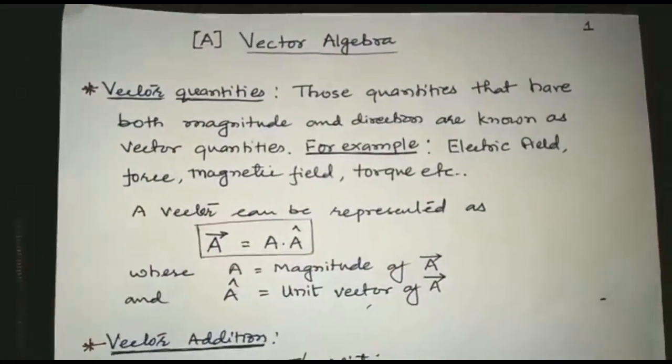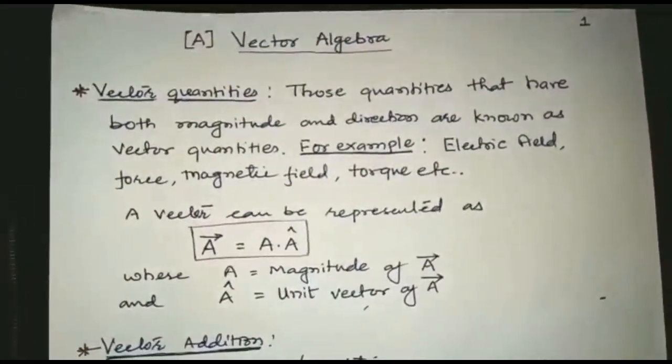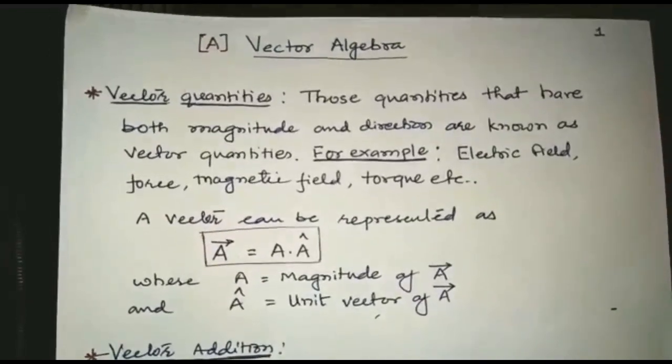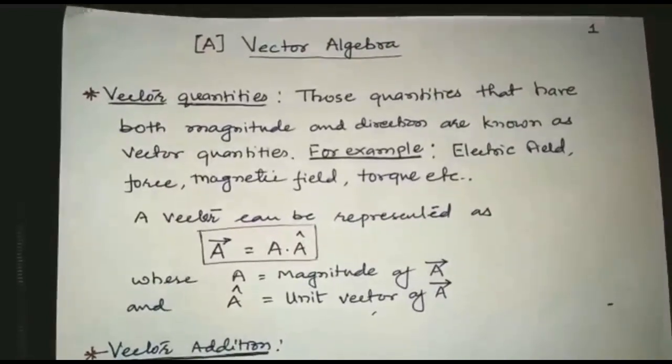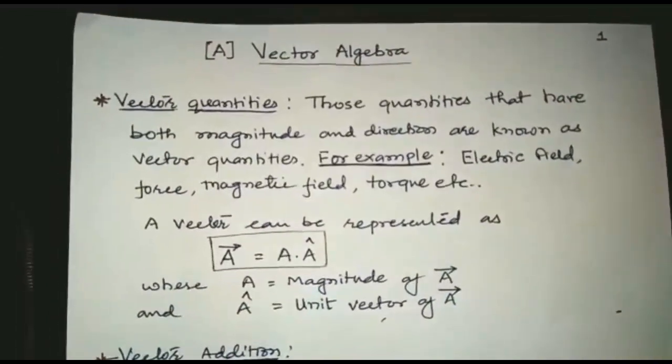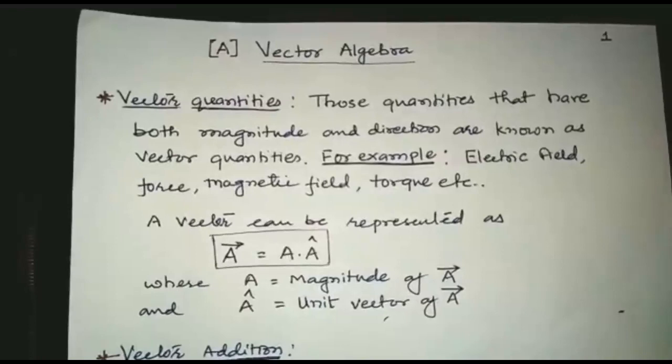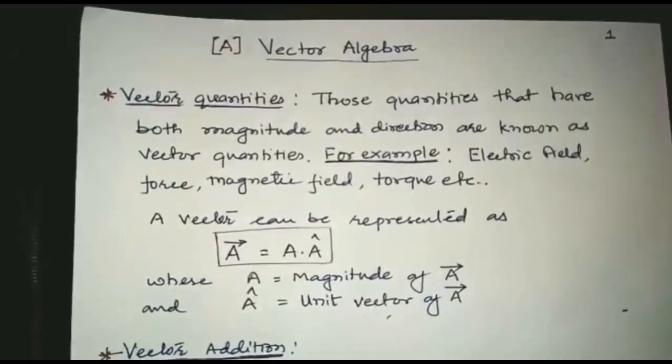Vector algebra. What do you mean by vector quantities? Vector quantities are those quantities that have both magnitude and direction. For example: electric field, force, magnetic field, torque etc.